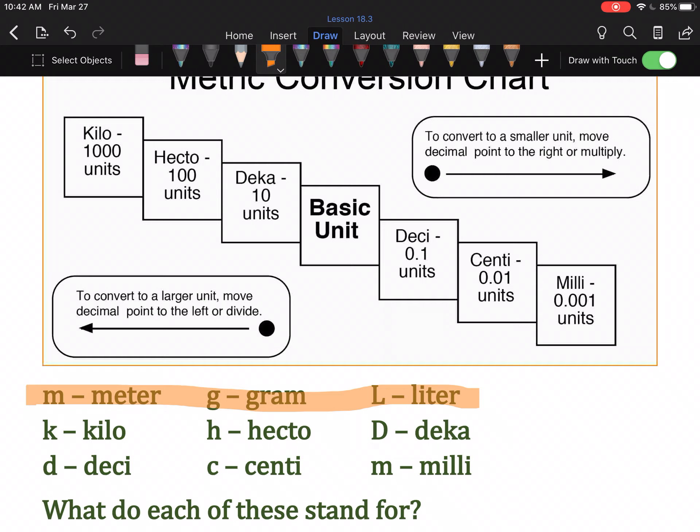For dry weight, we use ounces and pounds and tons. In the metric system, they use grams and the various prefixes. And we use fluid ounces and cups and pints and quarts and gallons, which are very confusing. In the metric system, they use liters with all the prefixes.